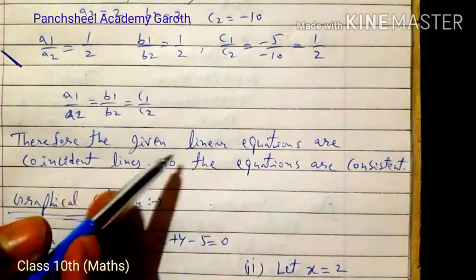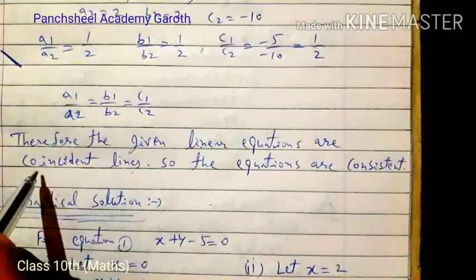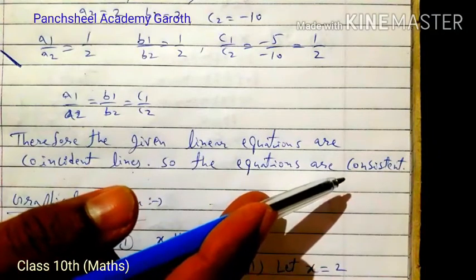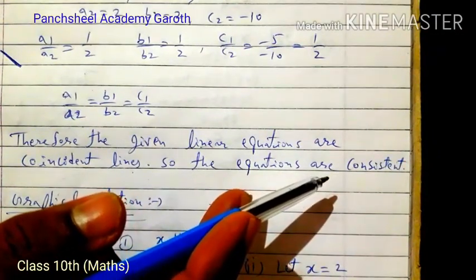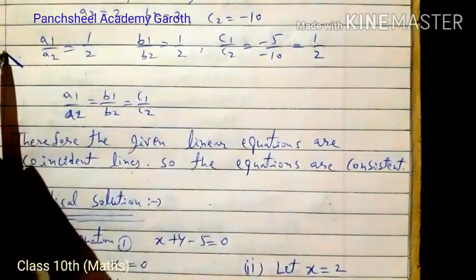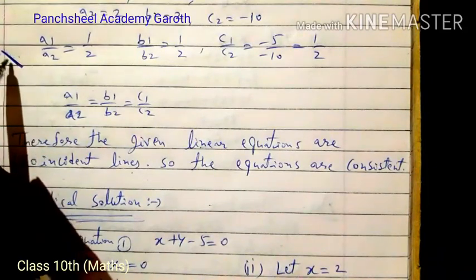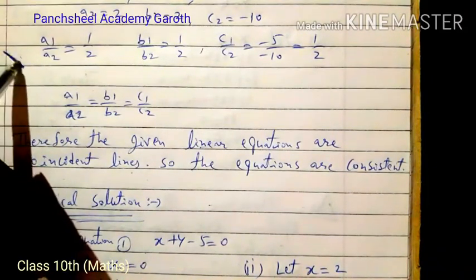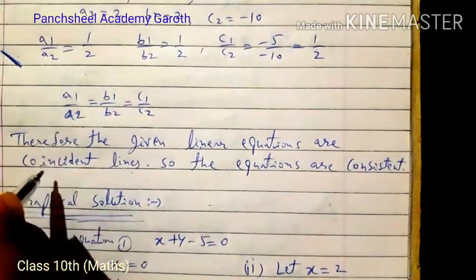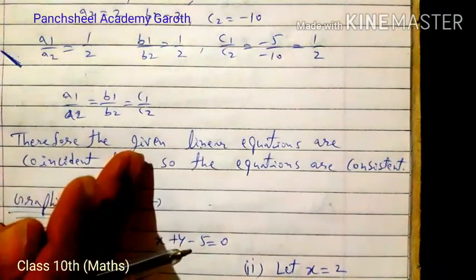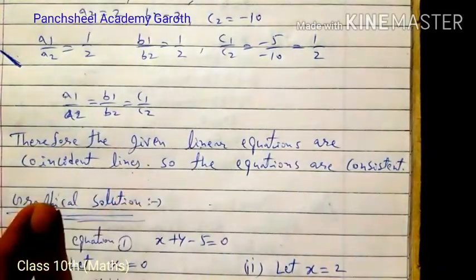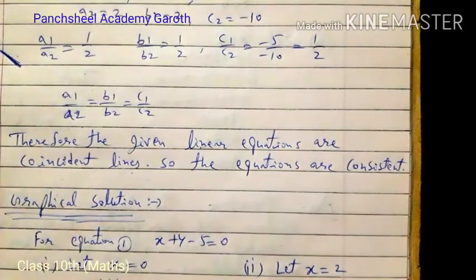Since all three ratios are equal, the two lines are coincident — the same line. So the equations are consistent with infinitely many solutions. Now we solve this graphically.